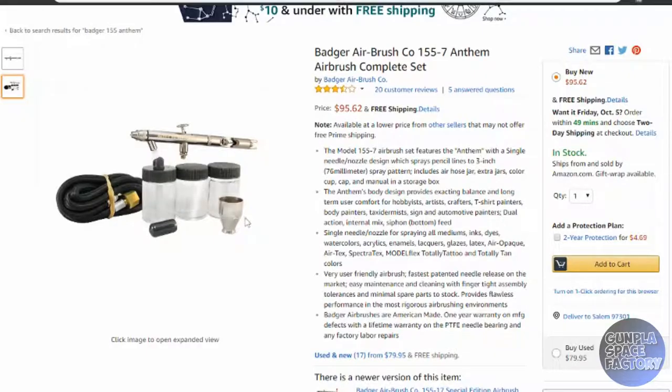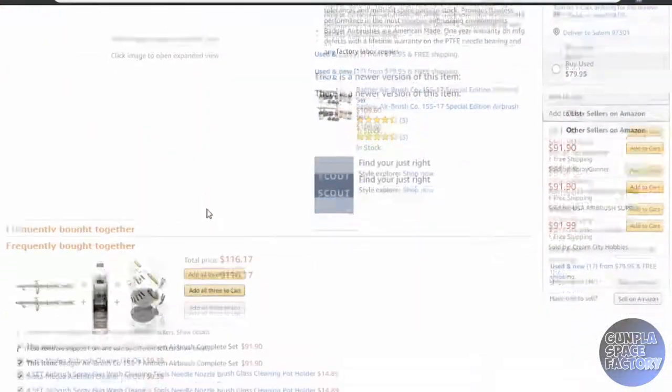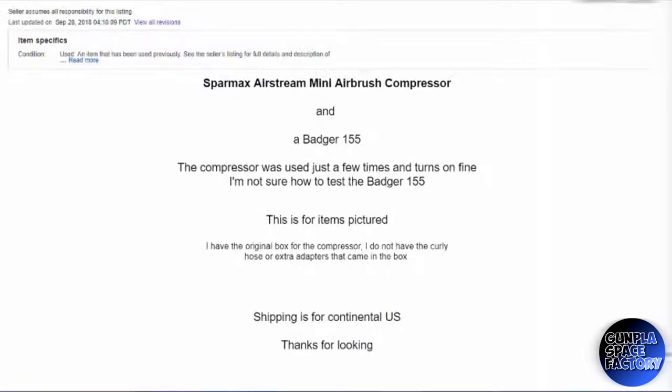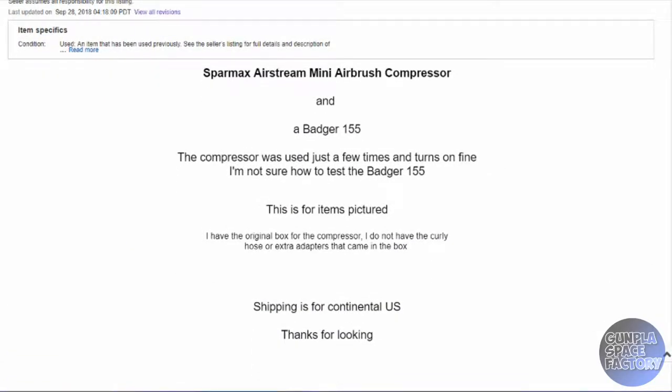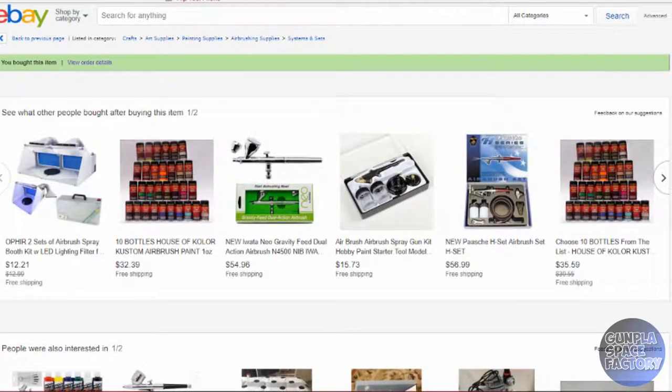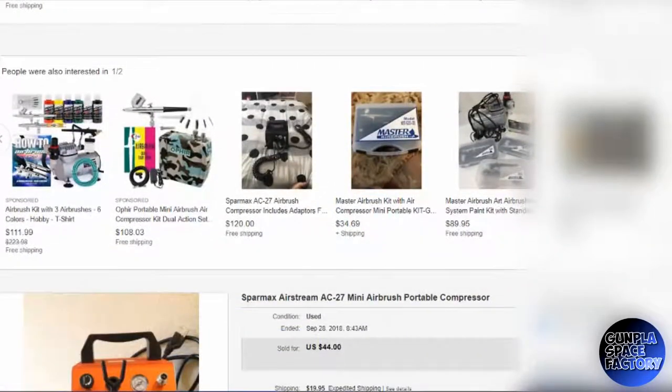A kit with a hose and accessories will usually cost you somewhere in the $90 range. No matter the condition, a working SparMax compressor and a Badger Anthem Airbrush listed for $44 plus shipping seemed too good to be true. The description said the compressor worked fine but was missing some accessories but the Badger 155 could not be tested. There isn't much that can go wrong on these Badger airbrushes and with parts being so cheap I was sure if it was faulty I could easily repair it. So after some thought I decided I just could not pass up this deal and decided to purchase the combo.